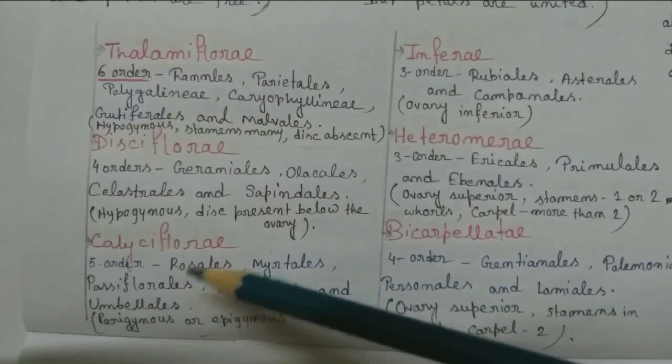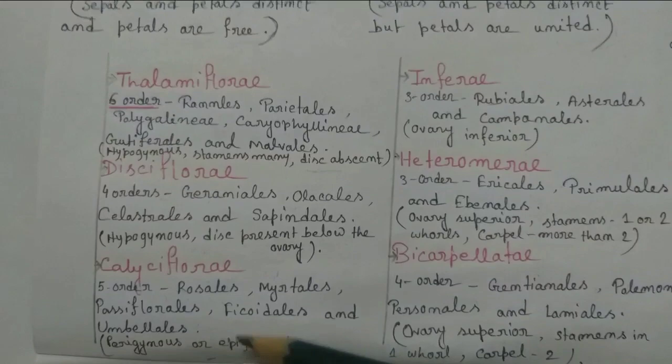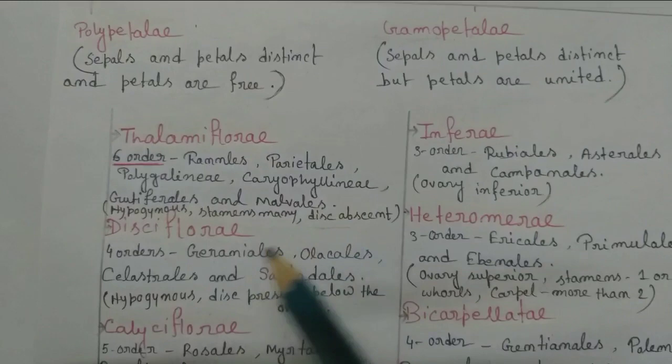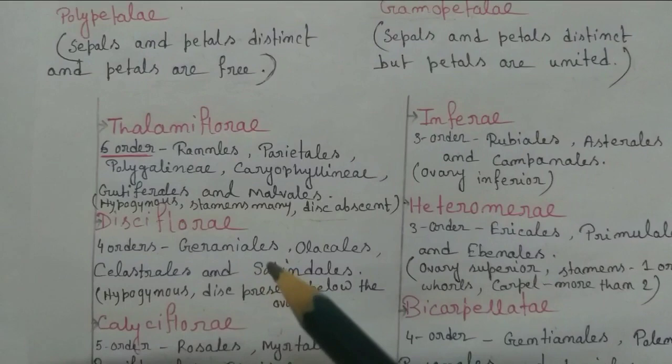This Thalamiflorae series is further divided into six orders. Those are Ranales, Parietales, Polygalinae, Caryophyllinae, Guttiferales, and Malvales.